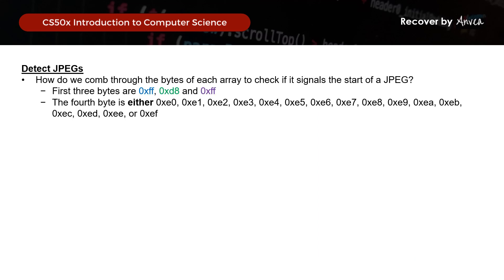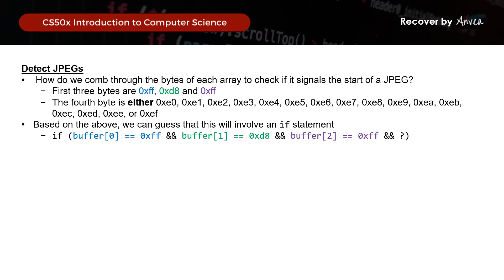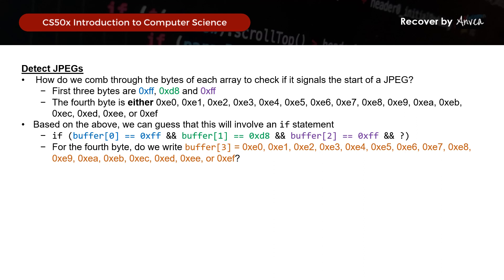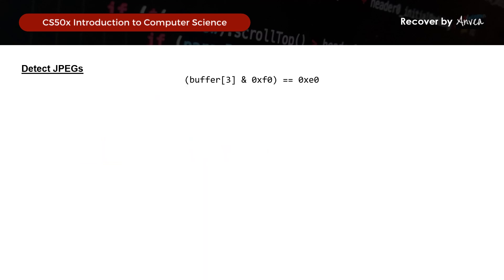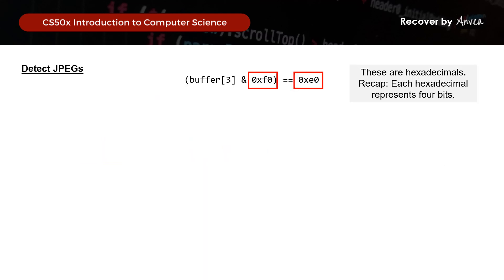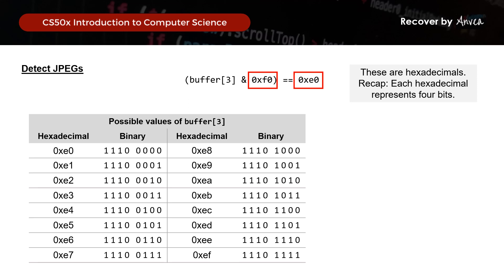How do we check if a block signals the start of a JPEG? We are given three fixed bytes and the fourth byte could be any of 16. This would involve an if statement where we check if buffer[0], buffer[1], and buffer[2] equal the respective fixed bytes. For the fourth byte, rather than listing all 16, the CS50 walkthrough states we can represent the check as: the first four bits are 1110, using bitwise AND. So the condition is: (buffer[3] & 0xF0) == 0xE0. I've included a link to a hex-to-binary converter website for reference.